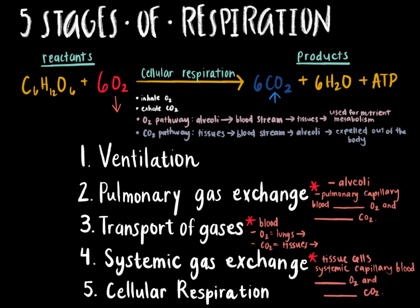Remember that we inhale oxygen and exhale carbon dioxide. The pathway for oxygen begins at the alveoli, which are tiny air sacs located inside the lungs. It then travels through the bloodstream and into the tissue cells to be used for cellular respiration. The carbon dioxide pathway begins at the tissue cells — carbon dioxide builds up there because of cellular respiration — then travels through the bloodstream and into the alveoli to be expelled out of the body through exhalation. Understanding these points will help you better understand why carbon dioxide and oxygen travel in opposite directions.